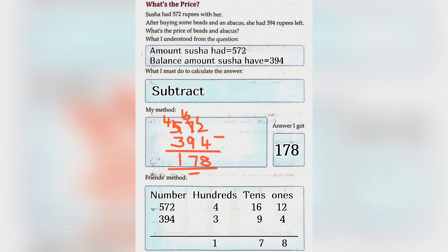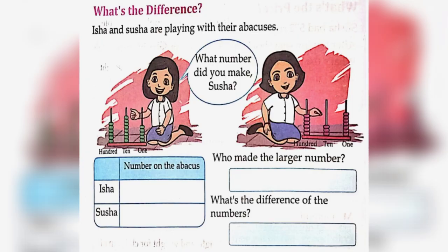What's the difference? Isha and Susha are playing with their abacus. Number on the abacus. Isha 685. Susha 637. Who made the larger number? Isha. What's the difference of the numbers? 685 minus 637 is equal to 48.